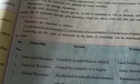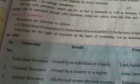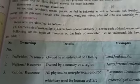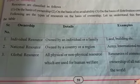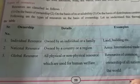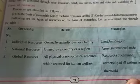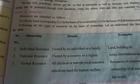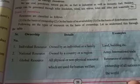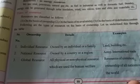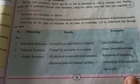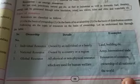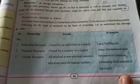Now we will see the types of resources. They are classified into three parts: basis of ownership, basis of re-availability, and basis of distribution. Individual resources are owned by a family or individual — such as land and buildings, because a building or land is owned by someone. Next is a country or region — imagine your map of India — that is a national resource, including army, international trade, and many other things.